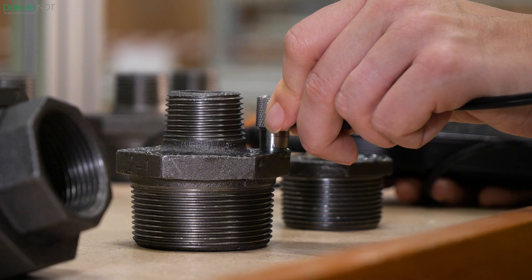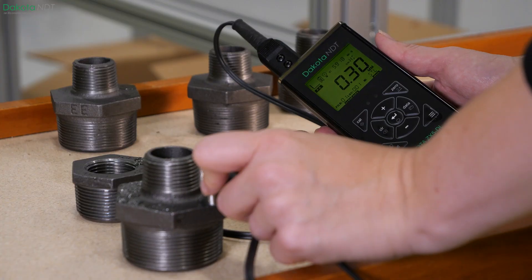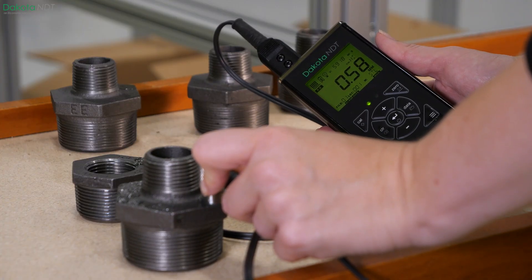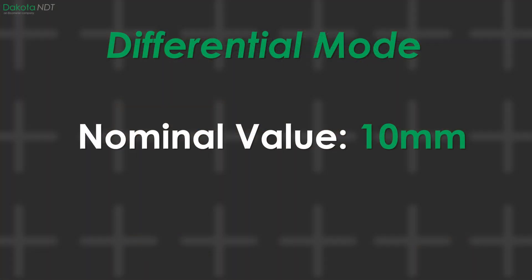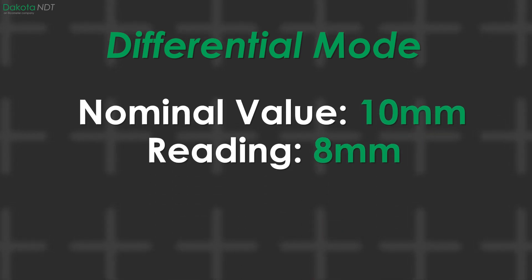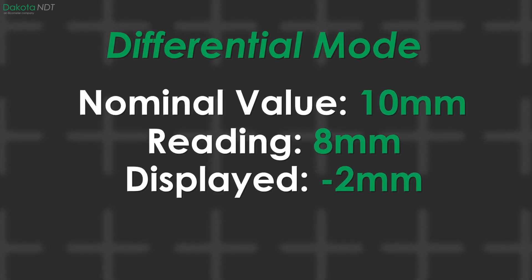In differential mode, the user enters a desired nominal thickness and the gauge will report all measurements in relation to that nominal value. For example, if the nominal is set to 10 millimeters, a reading of 8 millimeters will display as negative 2 millimeters.